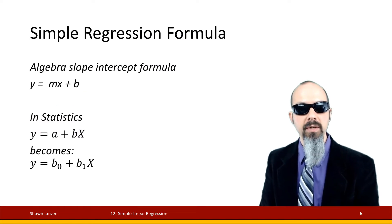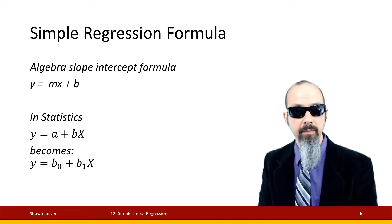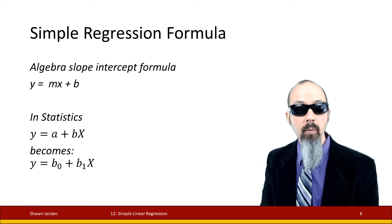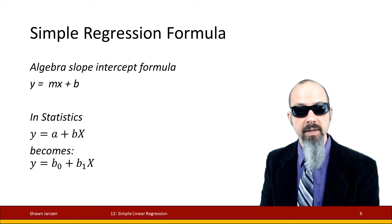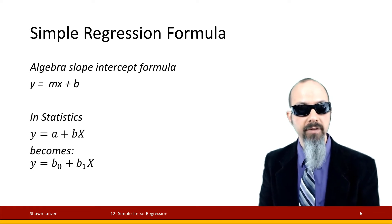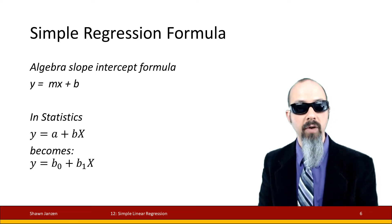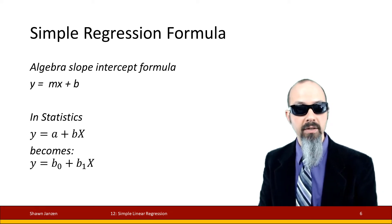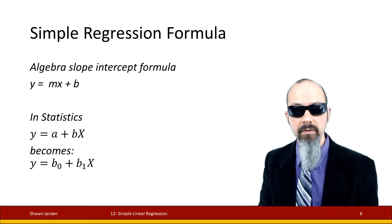Now let's talk about the regression formula itself. Back in early algebra you probably came across y equals mx plus b — the slope-intercept formula. Here, m was the slope, described as rise over run: some values of x you move left or right, and some values of y you move up or down. In statistics you might see it written as y equals a plus bx, where a is the y-intercept and b is the slope.